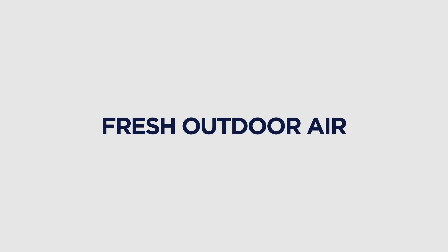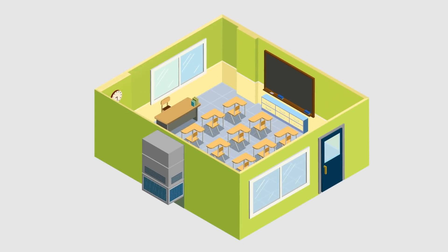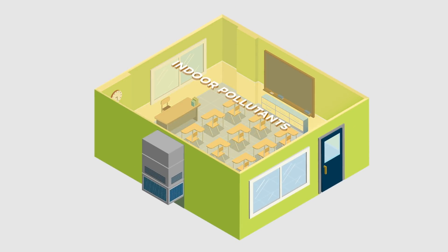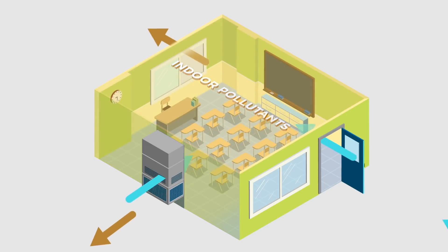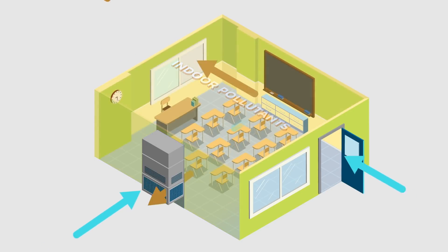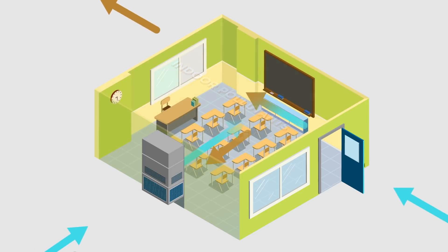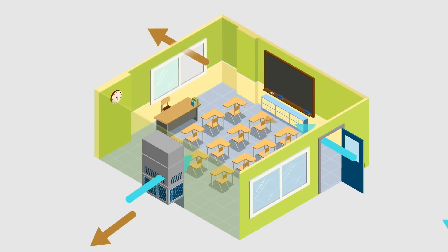Ventilation means providing fresh outdoor air into classrooms. Ventilation removes indoor air pollutants from buildings by bringing in outside air and exhausting room air, which dilutes the concentration of indoor pollutants.